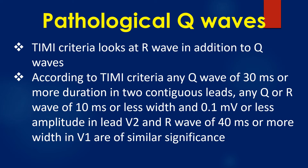TIMI criteria looks at R wave in addition to Q waves. According to TIMI criteria, any Q wave of 30 ms or more duration in two contiguous leads, or any Q or R wave of 10 ms or less width and 0.1 mV or less amplitude in V2, and R wave of 40 ms or more width in V1 are of similar significance.